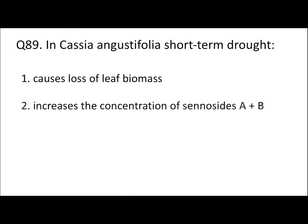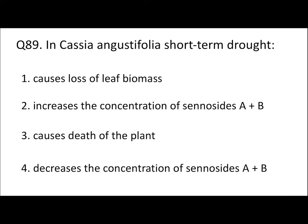Question 89: In Cassia angustifolia, short-term drought causes loss of leaf biomass, increases the concentration of sennoside A and B, causes death of the plant, or decreases the concentration of sennosides A and B? If the drought is short-term with limited water for a short period, it will not cause loss of leaves. Instead, it will increase the concentration of sennoside A and B due to stress in the plant. Death of the plant and decreased sennoside concentration require long-term drought. Short-term drought increases sennoside A and B concentration.